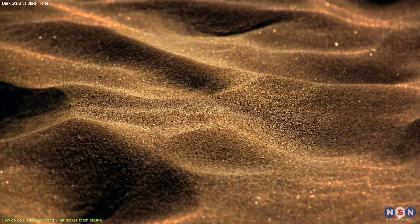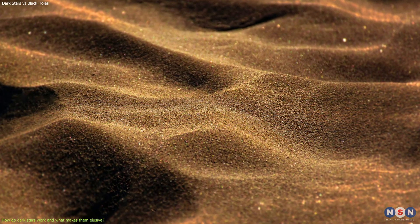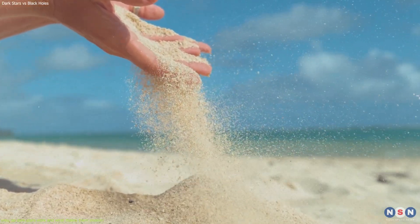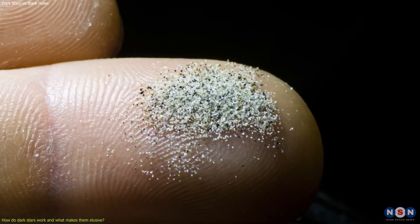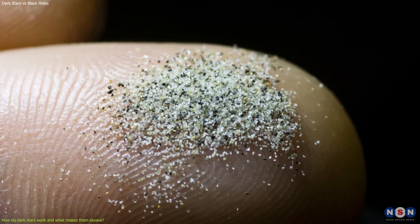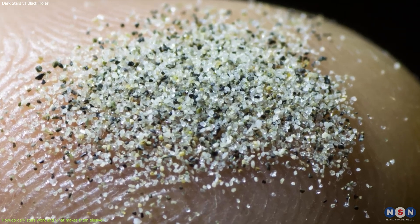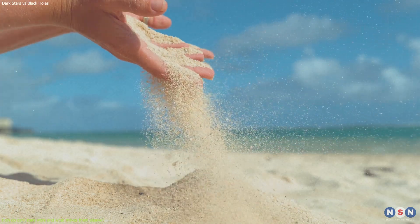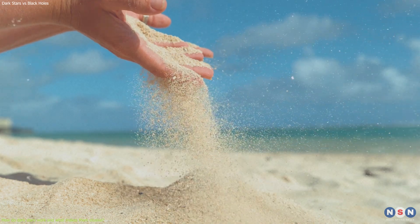To give you an idea of how small it is, imagine a grain of sand. Now imagine that you divide it into a billion pieces. Then you take one of those pieces and divide it into another billion pieces. Then you take one of those pieces and divide it into another billion pieces. You would have to repeat this process about 25 times to get to Planck's length.